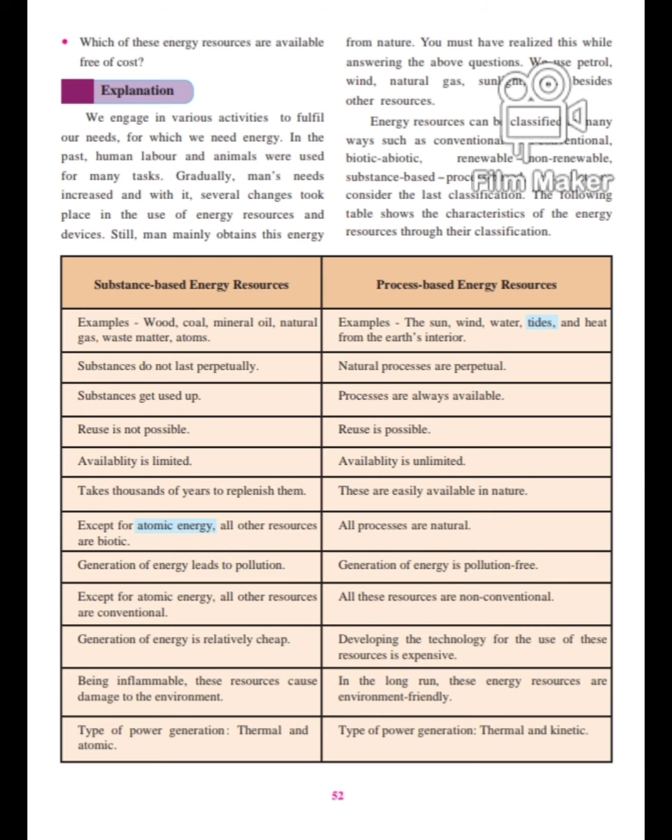Availability is limited. For wood, you have to cut down trees to get it as fuel. Coal takes hundreds and thousands of years to form. Mineral oil, coal, natural gas, petroleum — all are formed over many years due to fossils. It takes thousands of years to replenish them. Except for atomic energy, all other substance-based resources are biotic — meaning they are formed with the help of plants and animals.